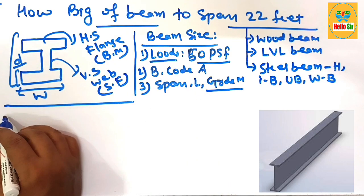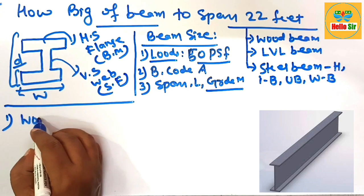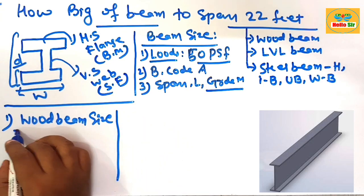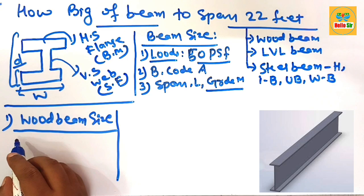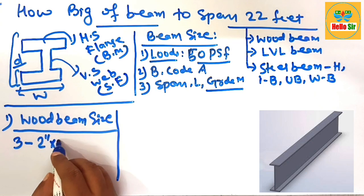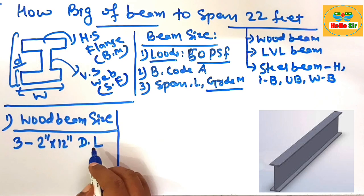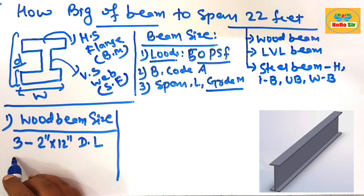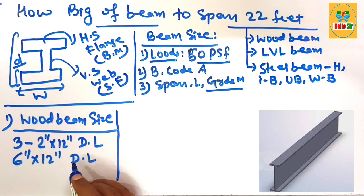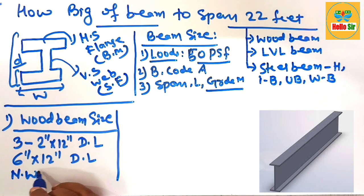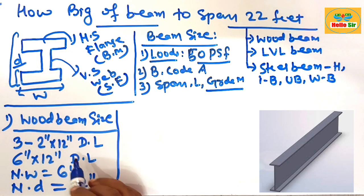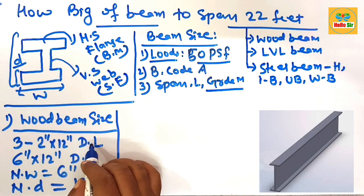For a general recommendation on wood beam size to span 22 feet: you can use three pieces of 2-inch by 12-inch dimensional lumber of Southern Yellow Pine. The nominal width of the beam is about 6 inches and the nominal depth is about 12 inches — that is, three-ply of 2×12 dimensional lumber as a wood beam to span 22 feet.